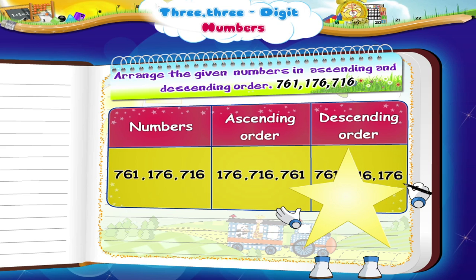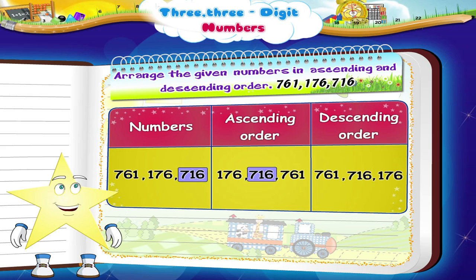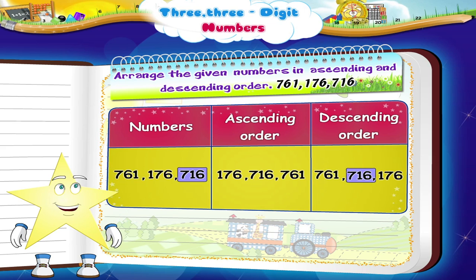Let me see what you've done. You have written the ascending order as one hundred and seventy-six, seven hundred and sixteen, and seven hundred and sixty-one. And the descending order is seven hundred and sixty-one, seven hundred and sixteen, and one hundred and seventy-six. That's perfect, Starry!